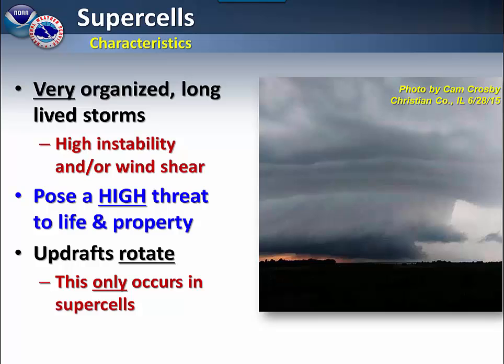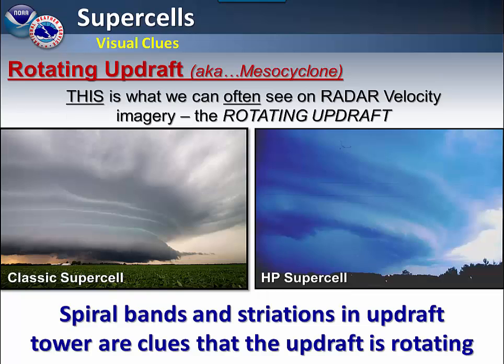Within the storms, the updrafts will rotate. This only occurs in supercells. The rotating updraft is also referred to as a mesocyclone. This is what we are specifically seeing on radar in terms of velocity imagery — the rotating updraft within a storm.